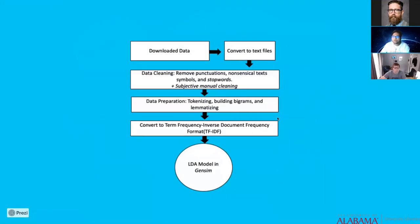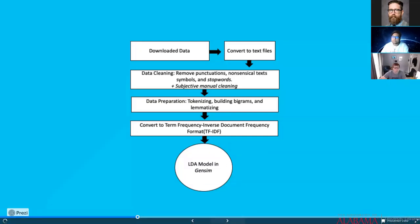Let's go through the preprocessing routine. A precursor to any good topic model is feeding it good data in canonical format to get good quality topics. After downloading the data, we convert it into text files, then clean the data by removing punctuations, nonsensical texts, symbols, and stop words. Then we prepare the data by tokenizing, building bigrams and trigrams, lemmatizing, and converting it into the term frequency inverse document frequency (TF-IDF) format required by the LDA model inside a library called Gensim.